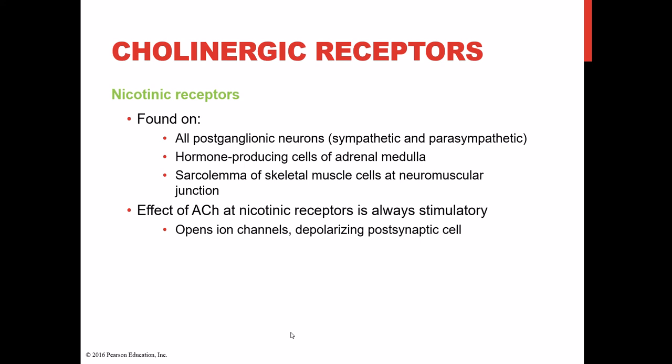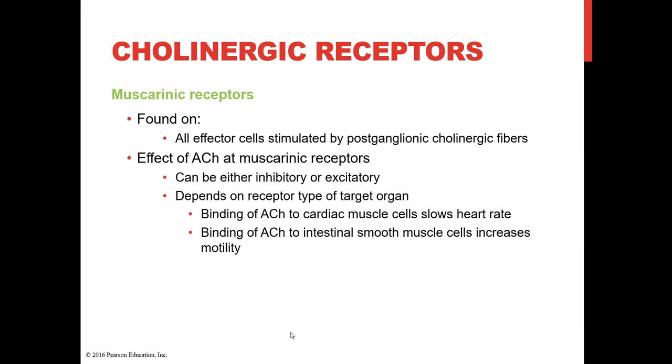Nicotinic receptors are found on all post-ganglionic neurons — both sympathetic and parasympathetic — and on the cells of the adrenal medulla and on the sarcolemma of muscle cells. When we looked at the neuromuscular junction in chapter 9, that acetylcholine receptor on the muscle cell was a nicotinic receptor. The effect of acetylcholine at nicotinic receptors is always excitatory — it always opens ion channels and depolarizes the post-synaptic cell.